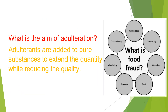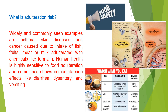What is the aim of adulteration? Adulterants are added to pure substances to extend the quantity while reducing the quality. What is adulteration risk? Widely and commonly seen examples are asthma, skin diseases, and cancer caused due to intake of fish, fruits, meat, or milk adulterated with chemicals like formalin. Human health is highly sensitive to food adulteration and sometimes shows immediate side effects like diarrhea, dysentery, and vomiting.